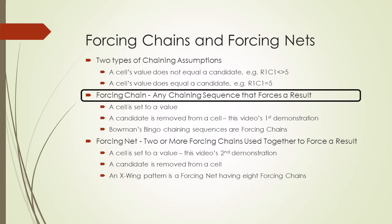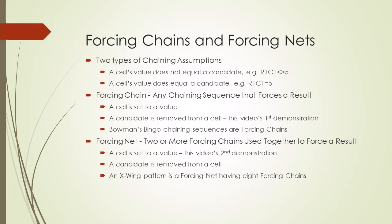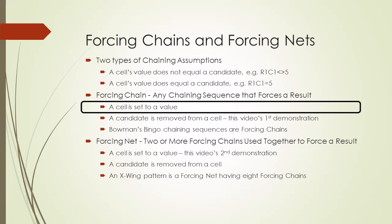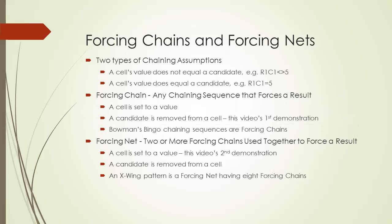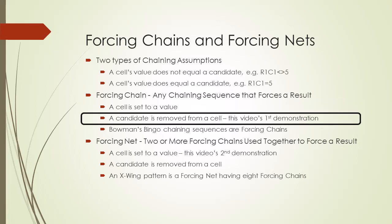A forcing chain is a generic term for any chaining sequence that results in something being done in solving a puzzle. The first result of a forcing chain is a cell gets set to a particular value, and the second result is a particular candidate is removed from a cell. A candidate being removed from a cell will be done in the first demonstration.